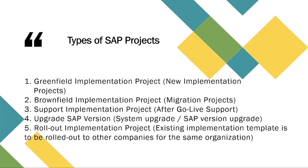First is Greenfield implementation project — this is a new implementation project. Second is Brownfield implementation project — this is a migration project. Third is Support implementation project — this is the support given after go live. Fourth is Upgrade SAP version — this is just an SAP version upgrade. Fifth is Rollout implementation project — here an existing implementation template is rolled out to other companies within the same organization.